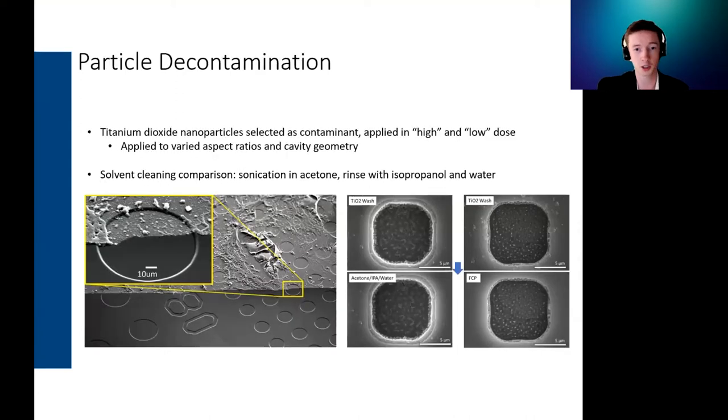Particle decontamination was actually our earliest project in our foray into this, using First Contact to remove particles from cavities on the microscale. We fabricated our cavities using reactive ion etching to create vertical sidewalls of different aspect ratios and also potassium hydroxide etches to create anisotropic features that are more pyramidal in shape and usually a bit deeper. We chose titanium dioxide as the contaminant because it was easy to identify visually with SEM and easy to verify using EDS. The nanoparticles of titanium dioxide that we had were a similar size to clean room dust, about 25 nanometers.